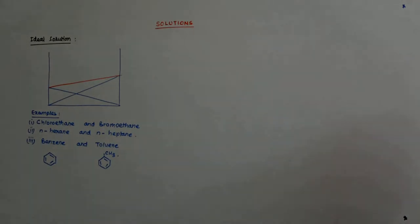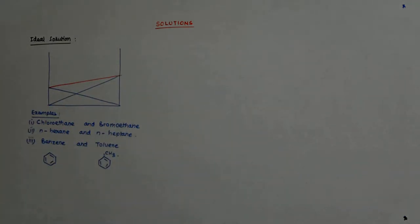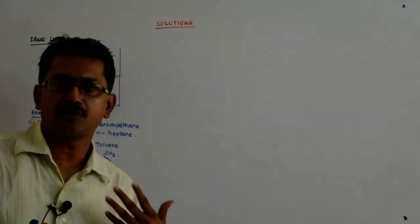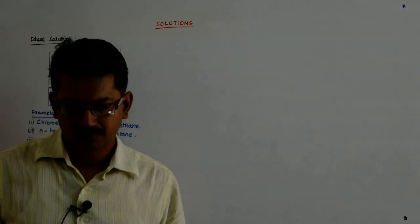We have seen that the ideal solution follows Raoult's law for the entire range. That is the first thing. And the examples, though they are very rare, the absolute ideal solution is very rare because you know whatever you do you have to have two components, right? And if there are two components there has to be some difference.